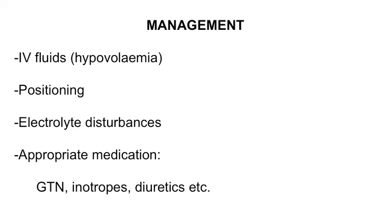Common management strategies for circulation complications include the following. Intravenous fluids should be administered to hypovolaemic patients. Consider the patient's position — patients with acute cardiac ischaemic pain may be more comfortable sitting up, however if there has been a reduction in cardiac output due to fluid loss, lying down may be more beneficial. Any electrolyte disturbances, for example potassium and magnesium, should be monitored and supplemented as required to maintain adequate cardiac function. Appropriate and specific medications could be considered, such as GTN, inotropes and diuretics.